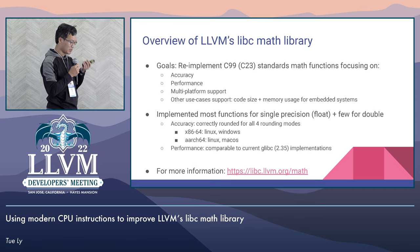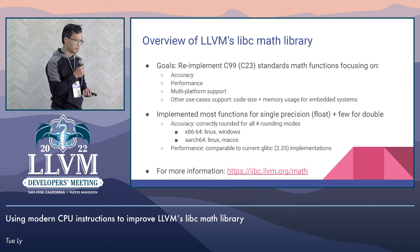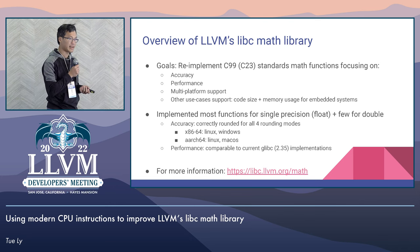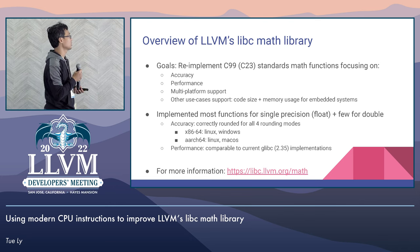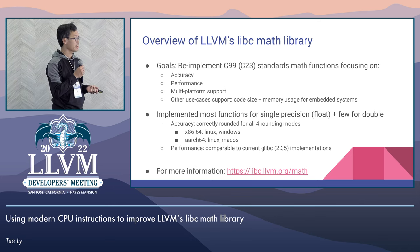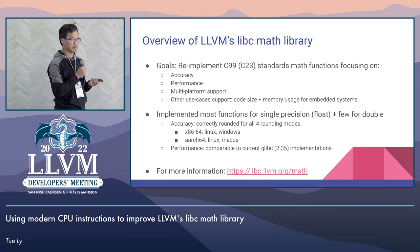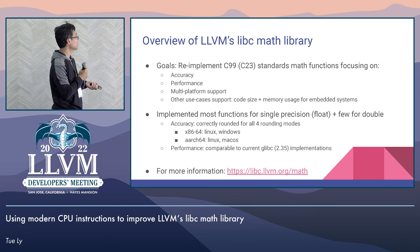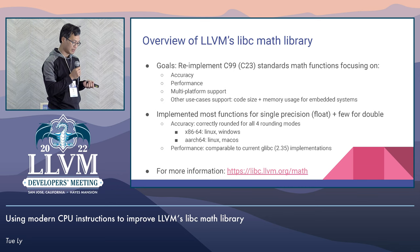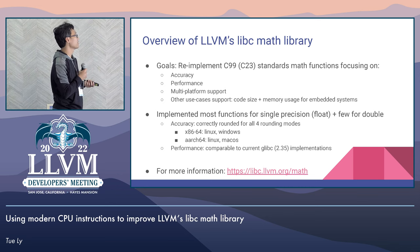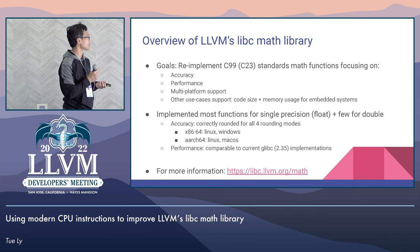Let's take a quick overview of the LLVM-libc math library. Our goal is to reimplement all the C standard library math functions. We are currently aiming for C99, but if we have time we can shoot for C23. Our highest priority is accuracy and also performance, because without performance you can just simply use MPFR. We also try to support most multi-platforms, taking advantage of the platform to speed things up if possible, and we also aim for supporting other use cases such as embedded systems.